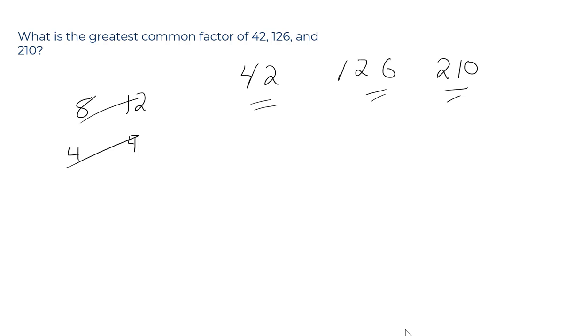That's not too tough, but how about big numbers like these? 42, 126, 210. Well, we can go through a three-step process here.